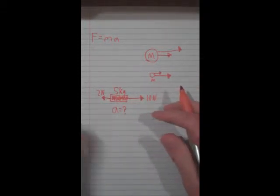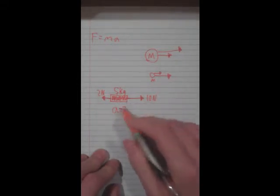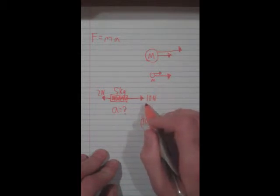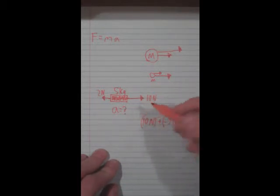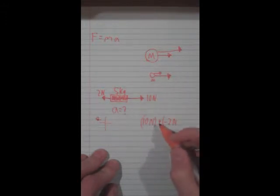Alright, so for that all we have to do is we first have to add up our forces. So in this case it will be 10 newtons plus negative 2 newtons. And the reason this is negative is because it is working against this 10. On a graph this is negative, so this is working against it. When you add these two up it equals 8 newtons. So our net force is 8 newtons in this direction.